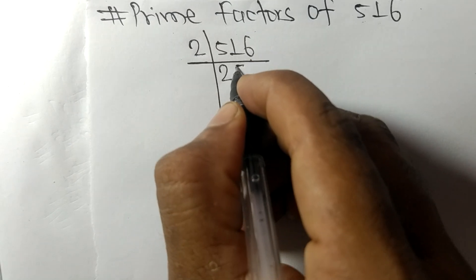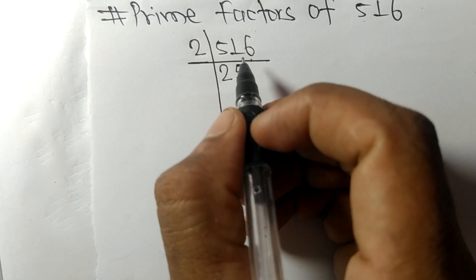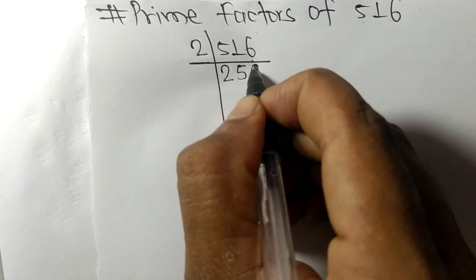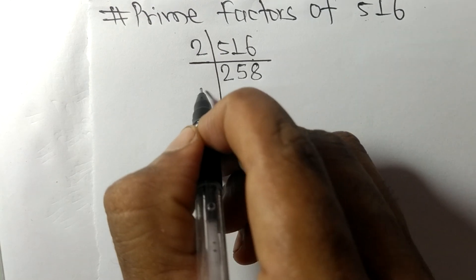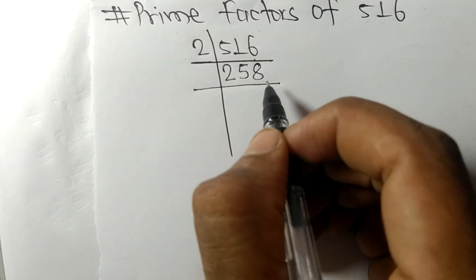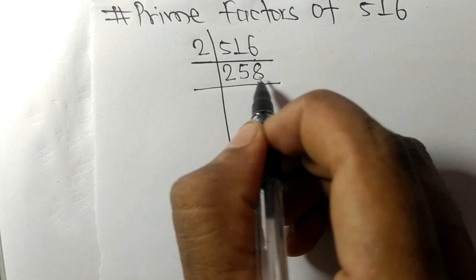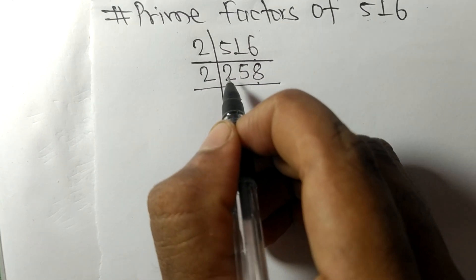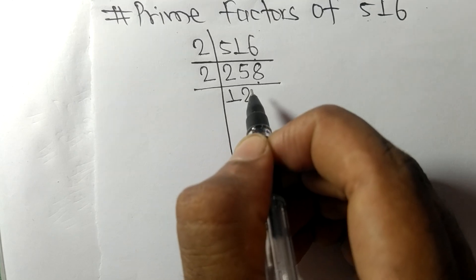2 times 5 means 10, remainder 1. 2 times 8 means 16. We get 258. Again we have even number 8 at last, so it is divisible by 2. 2 times 1 means 2, 2 times 2 means 4.